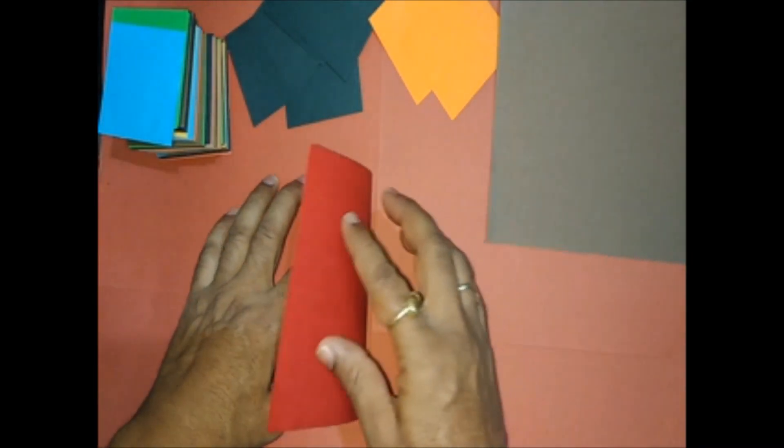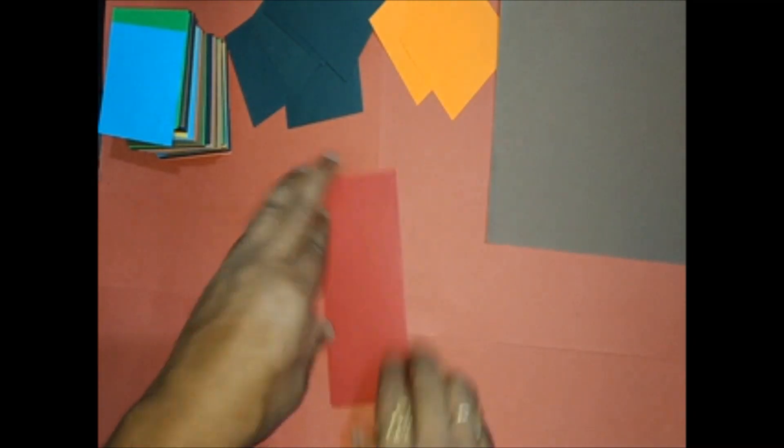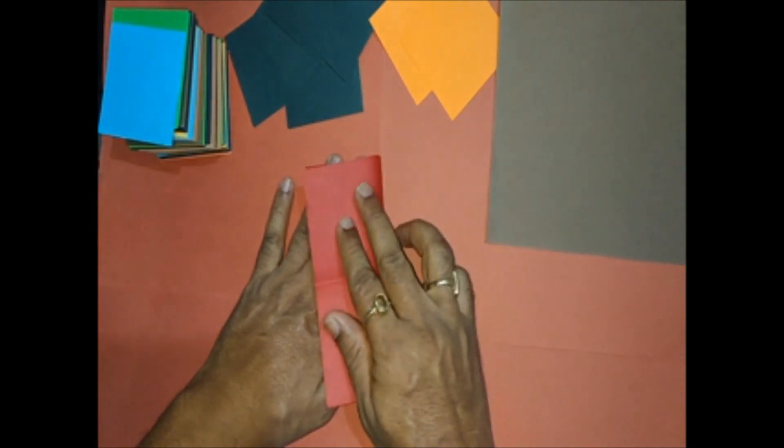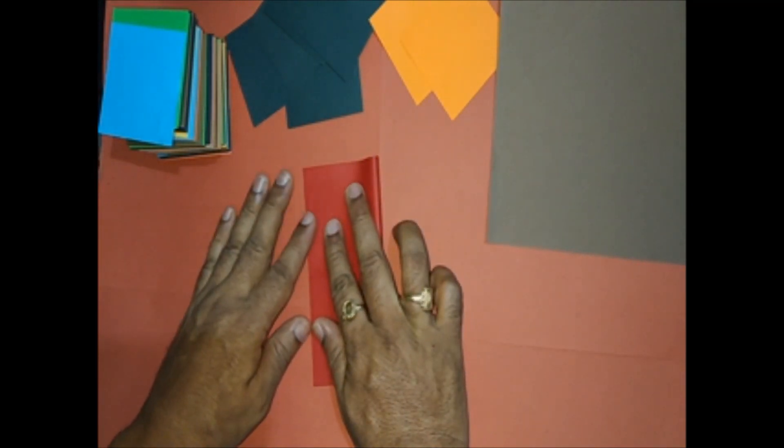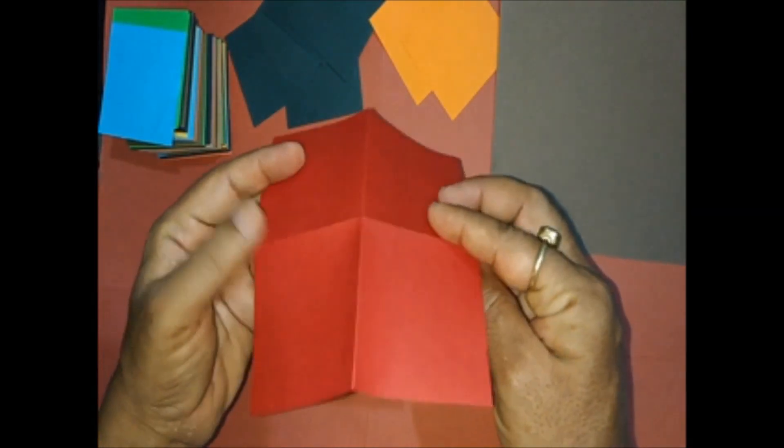Take a square piece of paper and make a rectangular fold. Open and make one more rectangular fold. We have 4 squares formed on it.